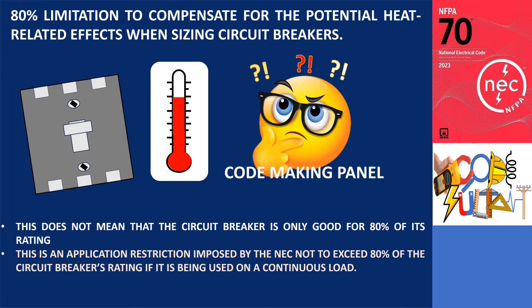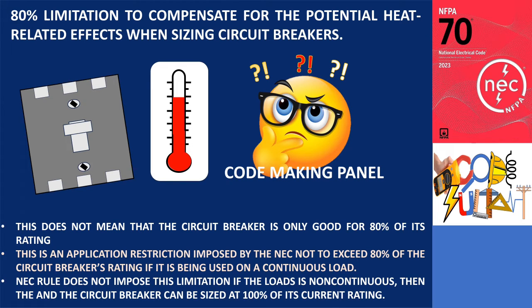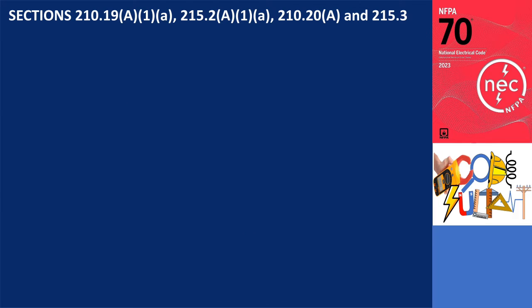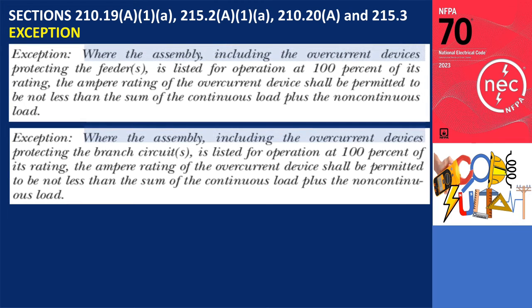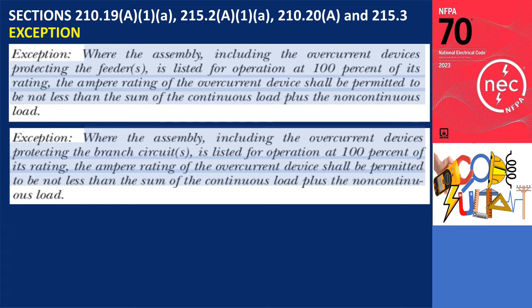In cases where circuit breakers solely supply non-continuous loads, the NEC rule does not impose this limitation, allowing the circuit breaker to be sized at 100% of its current rating. Like many rules, exceptions exist within the electrical code. In Sections 210.19A1A, 215.2A1A, 210.20A, and 215.3, there is an exception stating: where the assembly, including the overcurrent device protecting the branch circuit, is listed for operation at 100% of its rating, the ampere rating of the overcurrent device shall be permitted to be not less than the sum of the continuous load plus the non-continuous load.